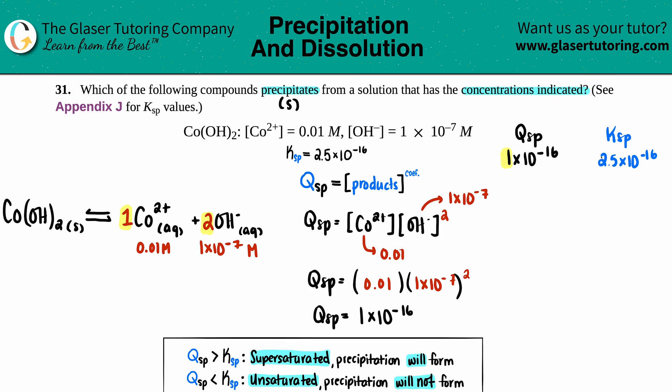1 is less than 2.5, or you can say 2.5 is greater than 1. The Qsp value is less than the Ksp.